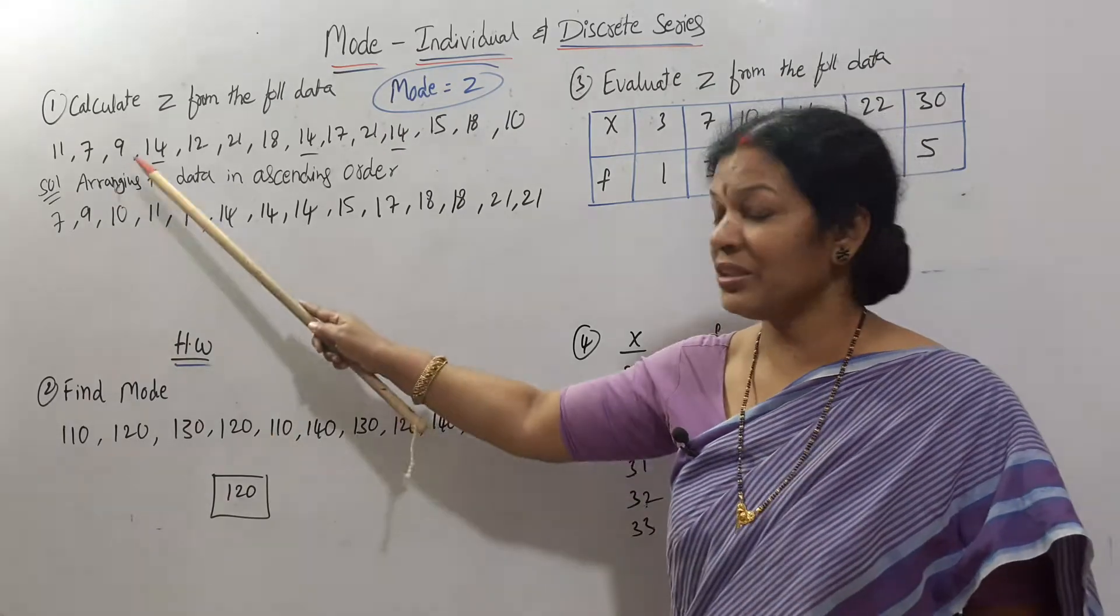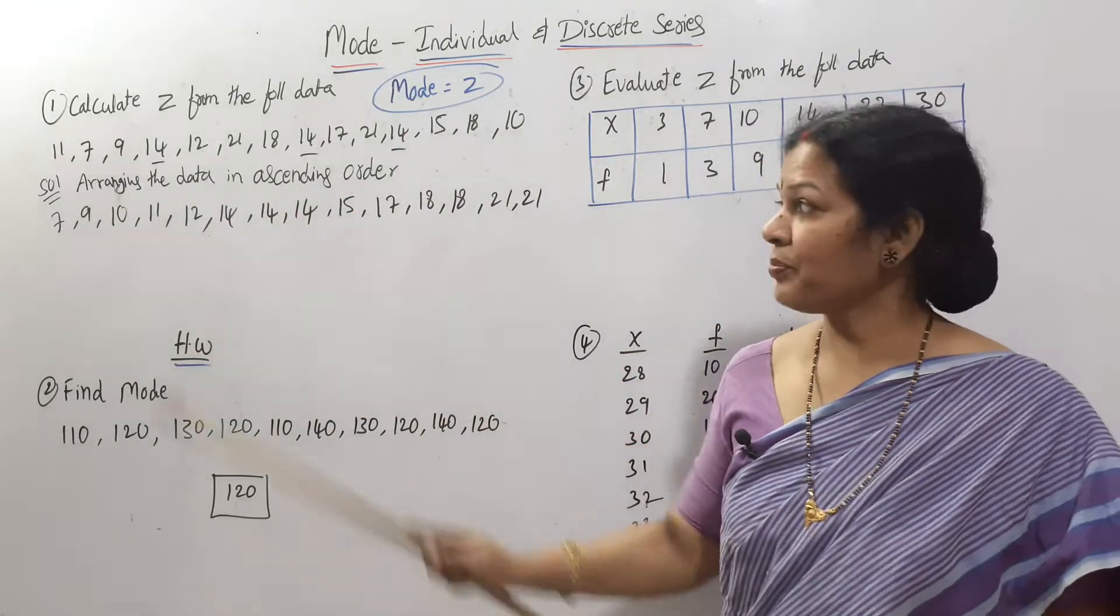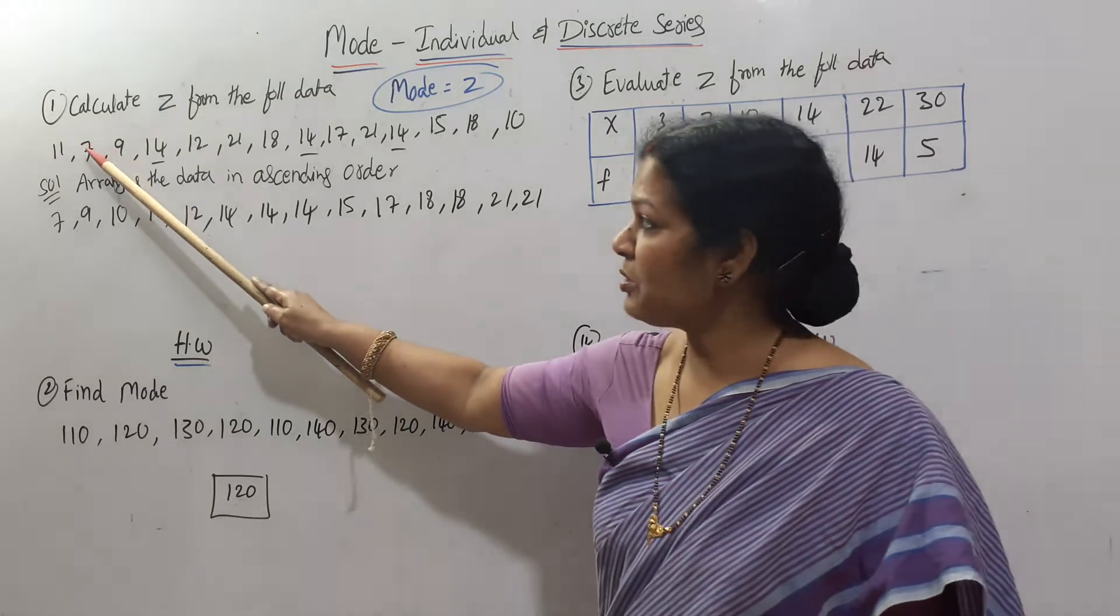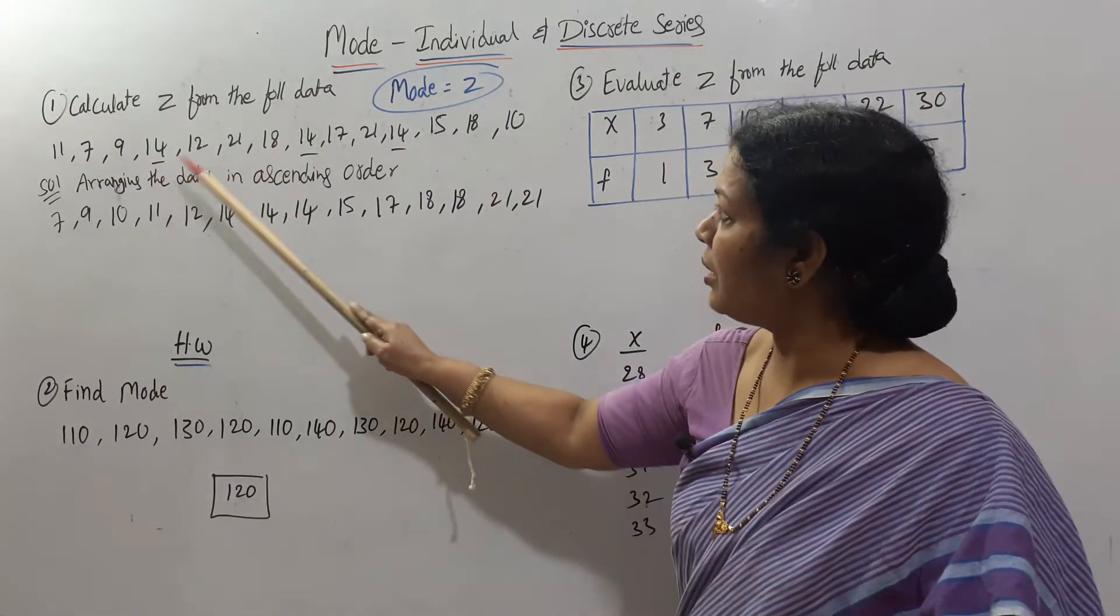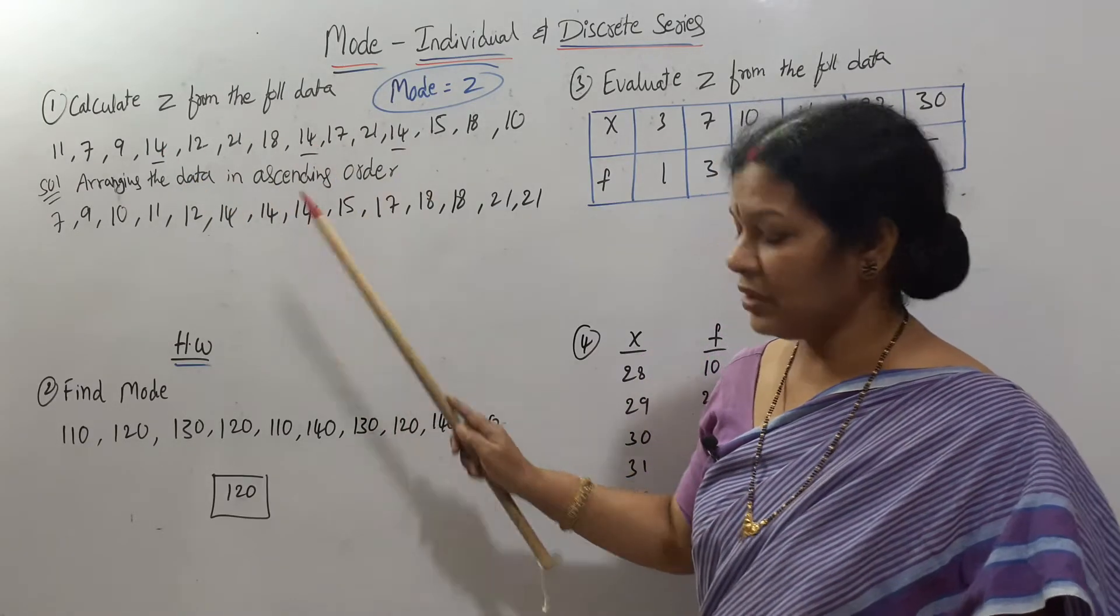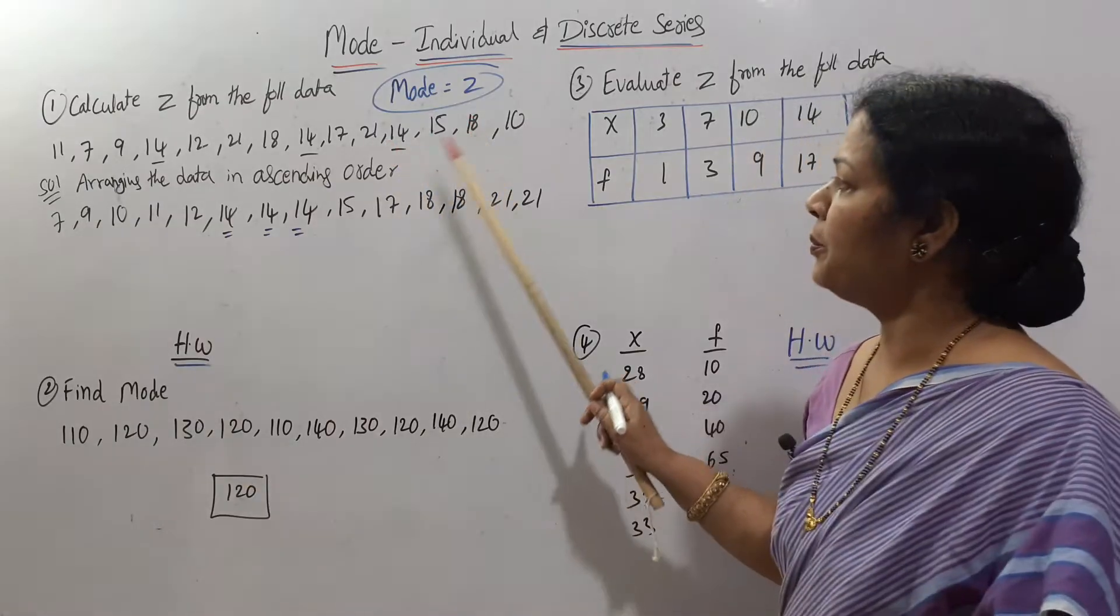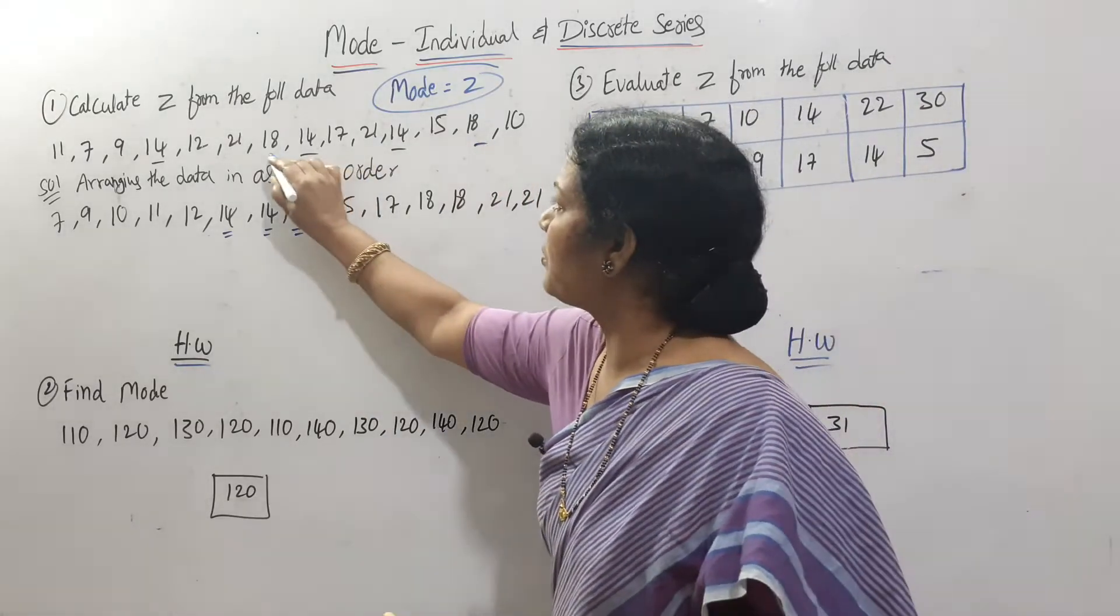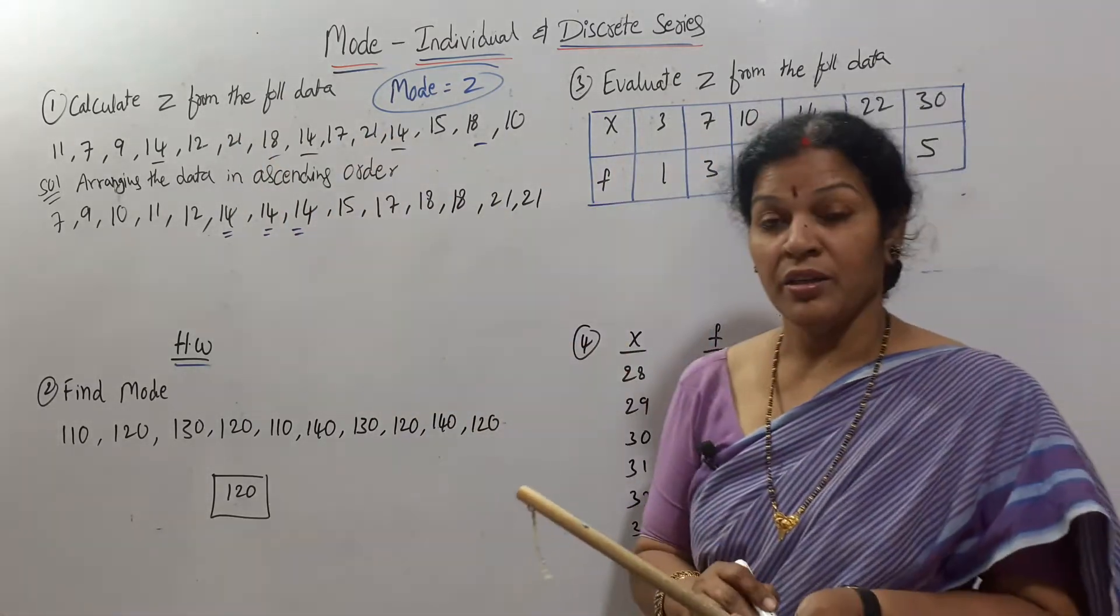We arrange the data in ascending order. The minimum number is 7, then 9, 10, 11, 12, 14. We got 14 three times, so I have written 14 three times. Then 15, 17, then 18 also two times, so I have written 18 twice. After that, 21 also appears two times.